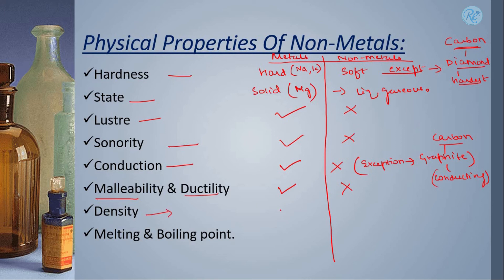In case of density, we know that metals have high density. Again, except few like caesium, sodium, potassium, while non-metals have low density.